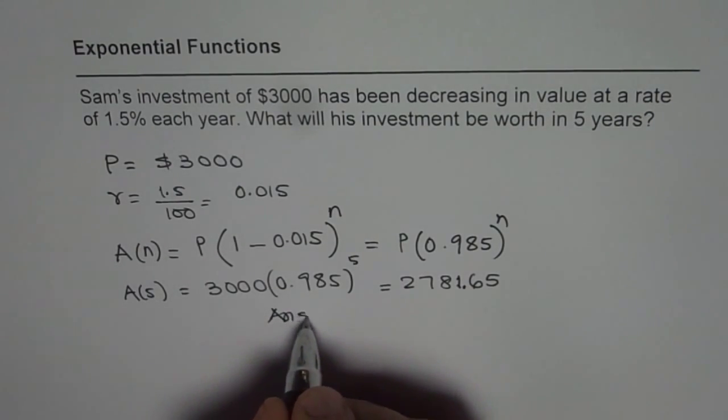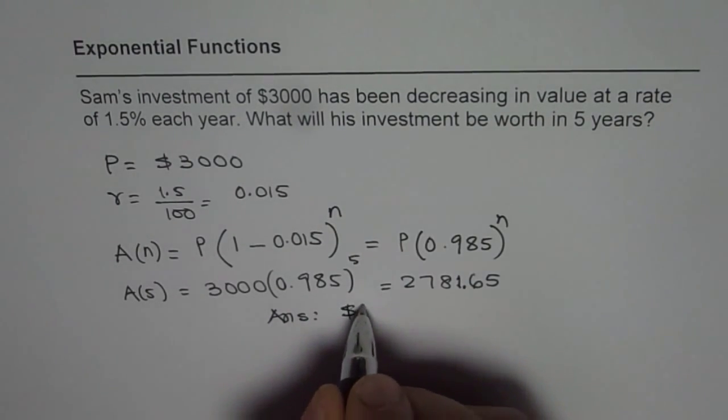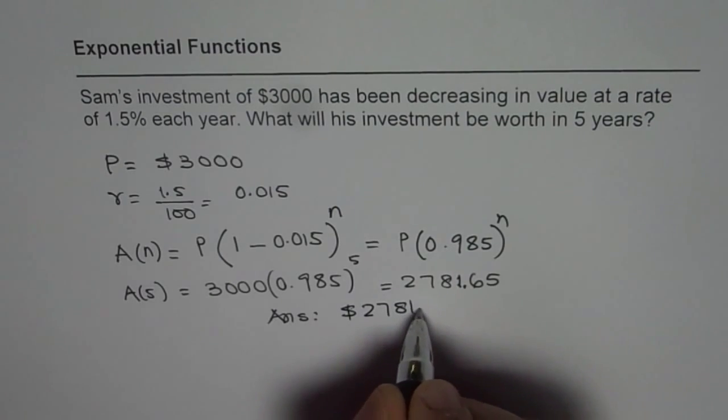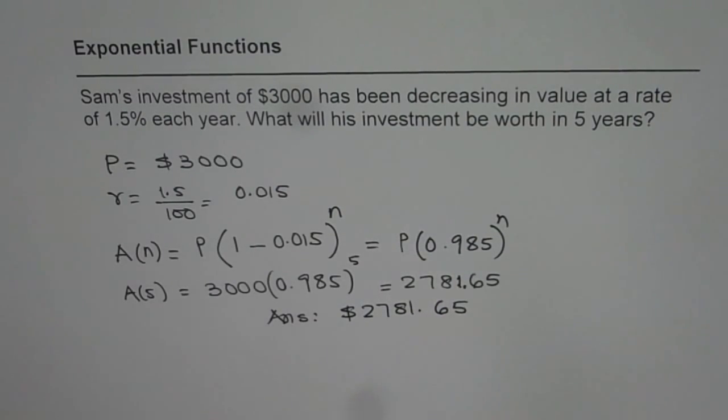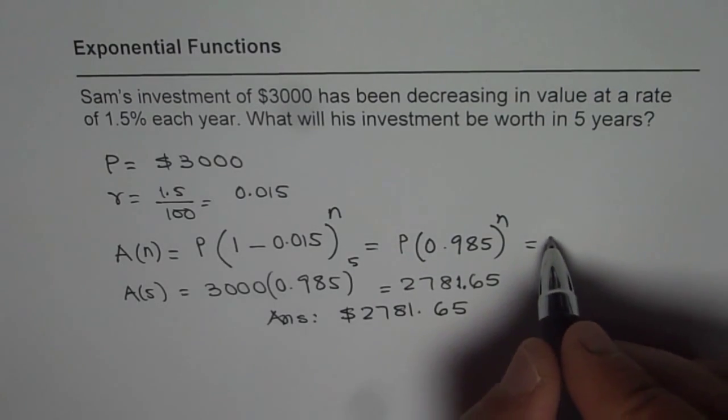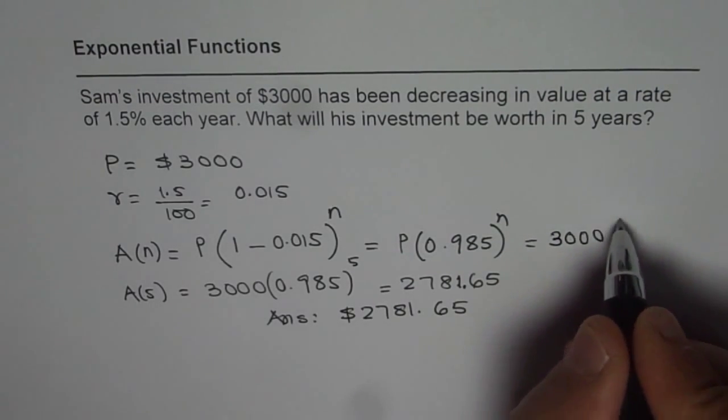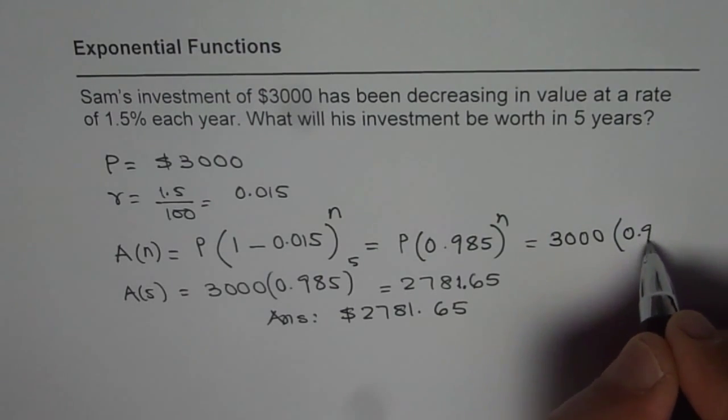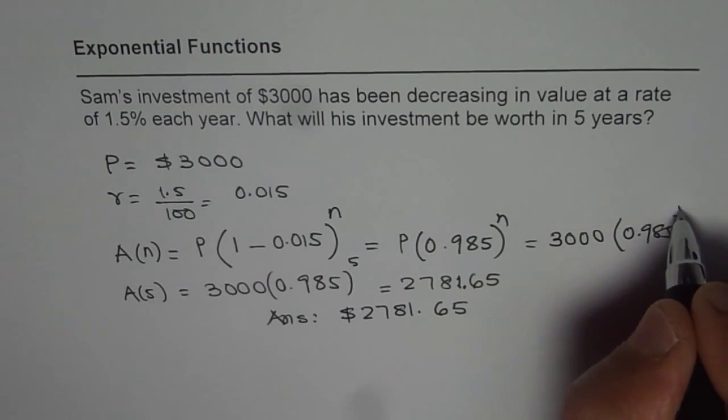Our answer is dollars 2781.65 after 5 years. In this equation, since we know that the principal is 3000, we should have written 3000 times 0.985 to the power of n.